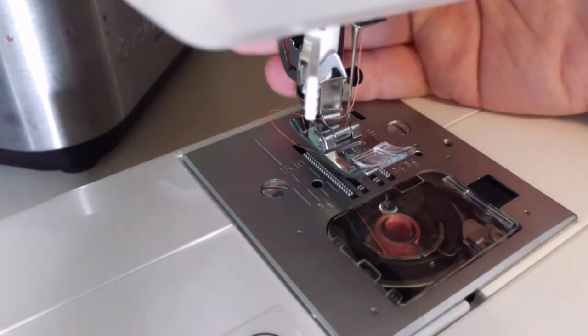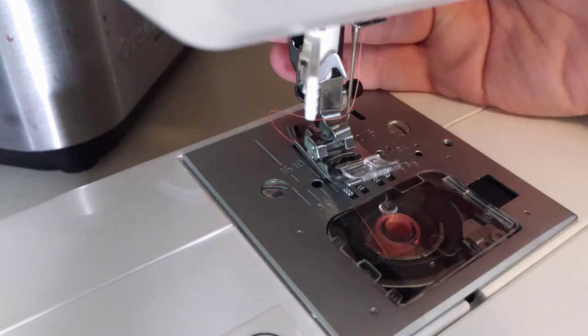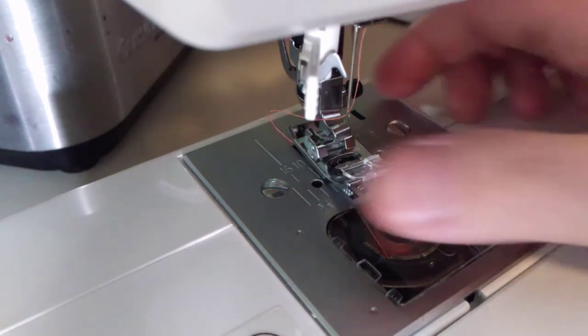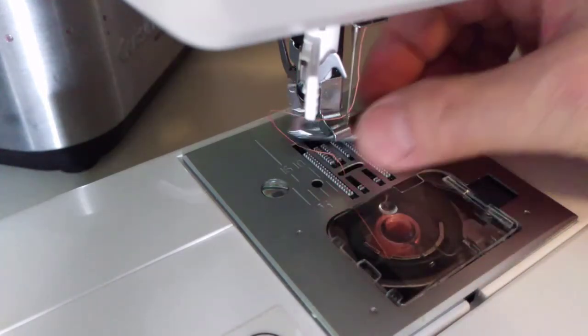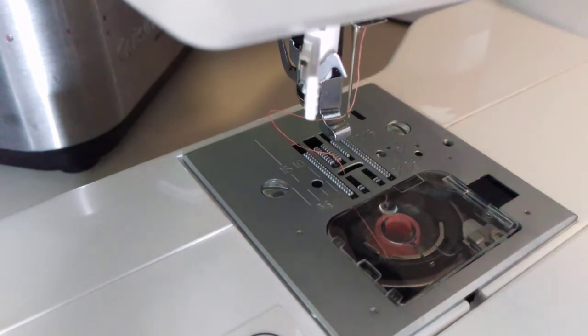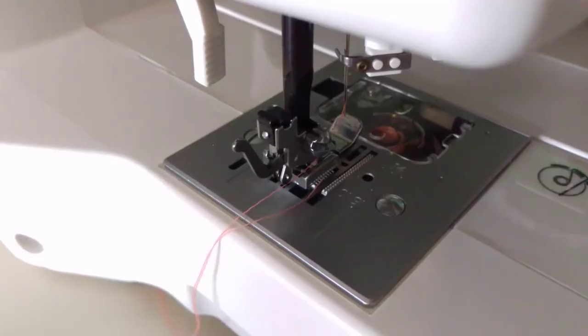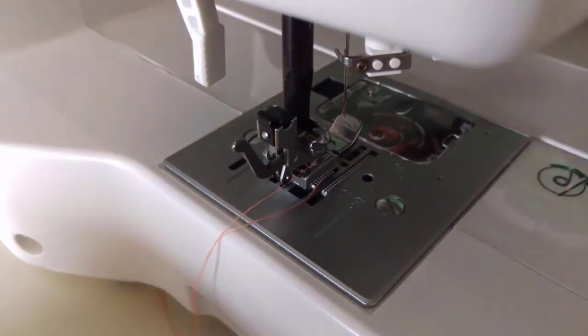Next, there's a little toggle behind everything. Just put your finger on it and push it towards you. The foot will actually drop onto the plate. And here's what that looks like from behind the sewing machine.